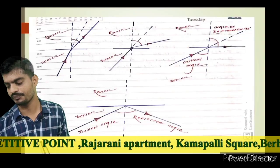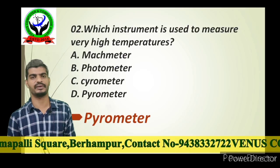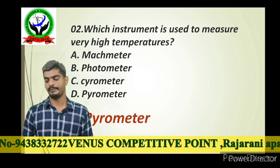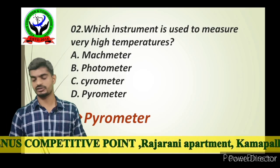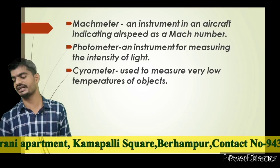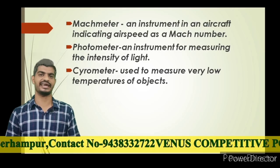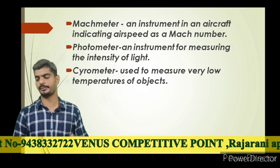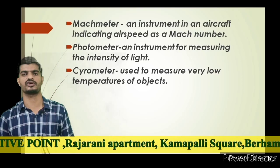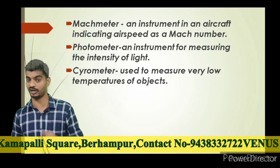Next question: which instrument is used to measure very high temperature? We are using a pyrometer. The Mach meter is an instrument in an aircraft indicating air speed. For intensity of light, we use a photometer. The cryometer is used for low temperature.